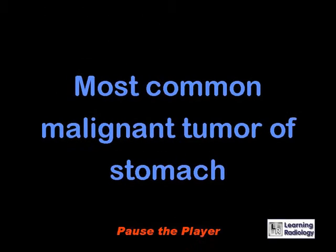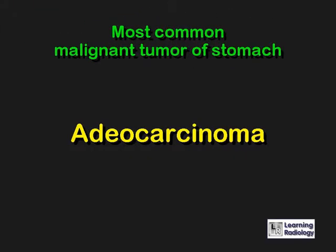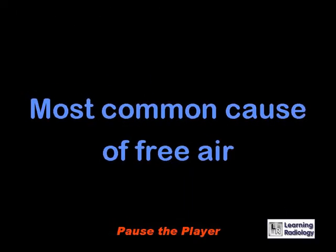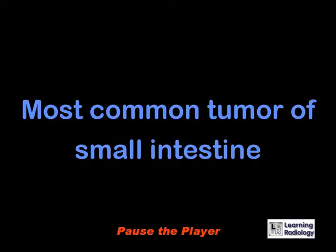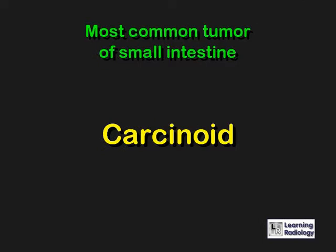What is the most common malignant tumor of the stomach? Adenocarcinoma. What is the most common cause of free air? Perforated duodenal ulcer. What is the most common tumor of the small intestine? Carcinoid tumors.